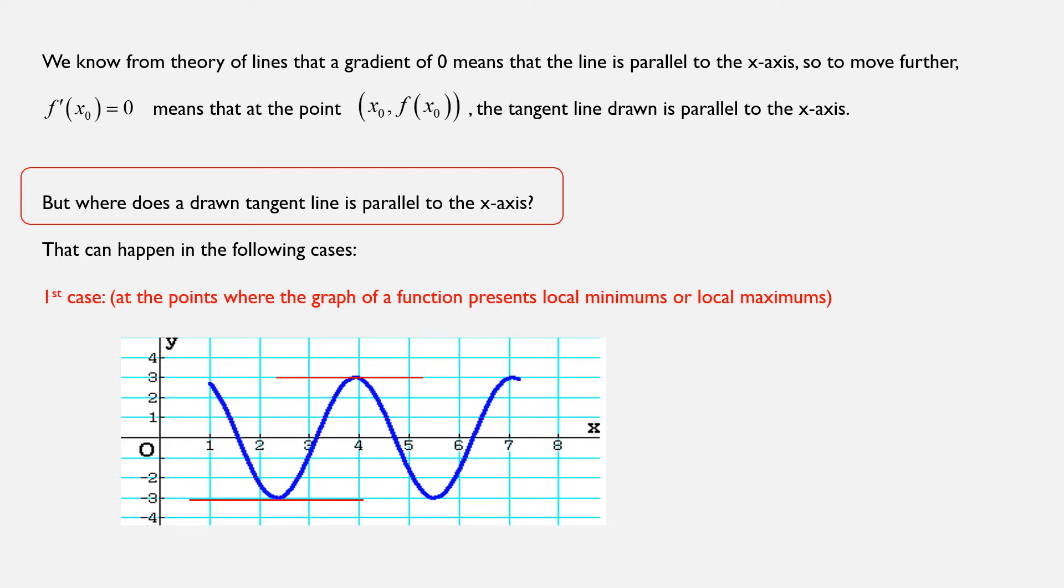But where does a drawn tangent line actually parallel the x-axis? Well, that can happen in the following cases. In the first case, we have the points where the graph of a function presents local minimums or local maximums. We can see here that I have already drew two cases, one on the left where the graph presents a local minimum and one on the right where the graph presents a local maximum respectively. And we can see that if we draw the tangent lines at these specific points, obviously these lines will be parallel to the x-axis.